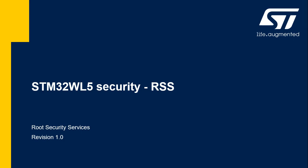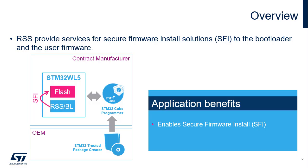Hello, and welcome to this online training module dedicated to the advanced security features of the STM32WL5 Root Security Services, or RSS. RSS is used to load content in the secure or non-secure flash memory. The RSS provides runtime root security services used by the STM32 Secure Firmware Install Solution, or SFI. For more information on protected memories, please refer to the online training module STM32WL5 Security Memories Protection.